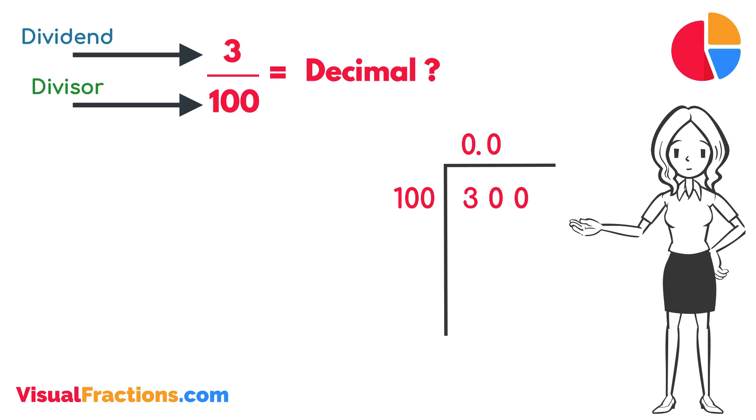How many times does 100 go into 300? Exactly 3 times. We write 3 after the decimal point in the quotient, making it 0.03.